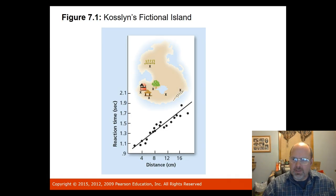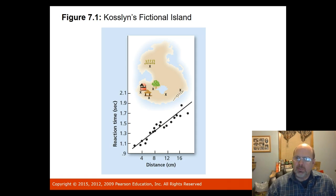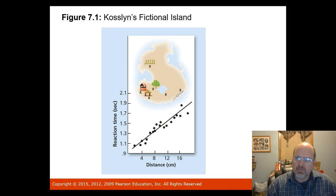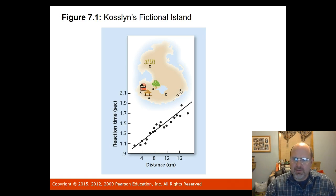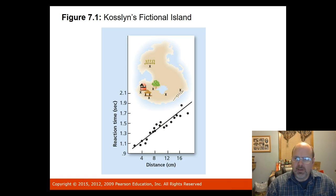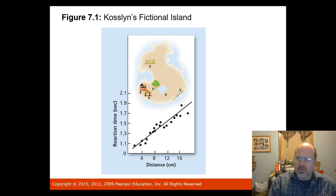Kosslyn in 1978 conducted a study where participants were asked to push a button when they had imagined themselves moving from one place on an island to another. As you can see in the graph, participants took longer to complete the task when the locations on the image were farther apart.